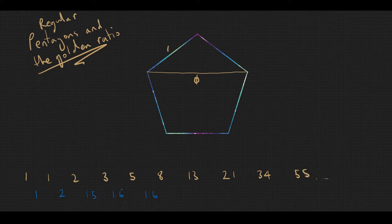5 divided by 3 is 1.6 recurring, 8 divided by 5 is 1.6, 13 divided by 8 is 1.625, 21 divided by 13—I'll get a calculator for that one—is 1.6154 dot dot dot. And I'll do one more: 34 divided by 21 is 1.619 and it goes on.